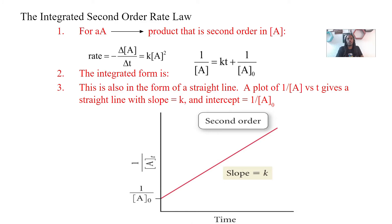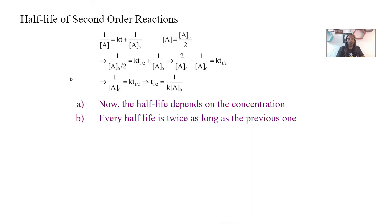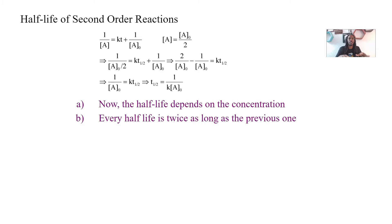The y-intercept for second order is 1/[A]₀, the reciprocal of the initial concentration. For second order half-life, unlike first order, the half-life depends on concentration. Every half-life will be twice as long as the previous one — that's the key thing about second order. The half-life equation for second order is: t½ = 1 / (k[A]₀). Note that this is different from first order, where we had 0.693/k.